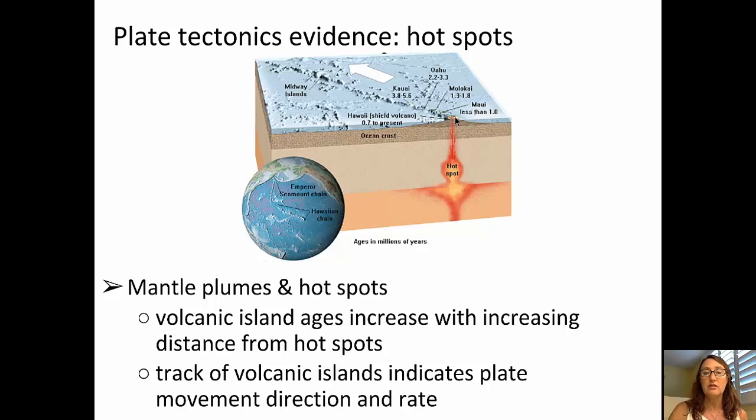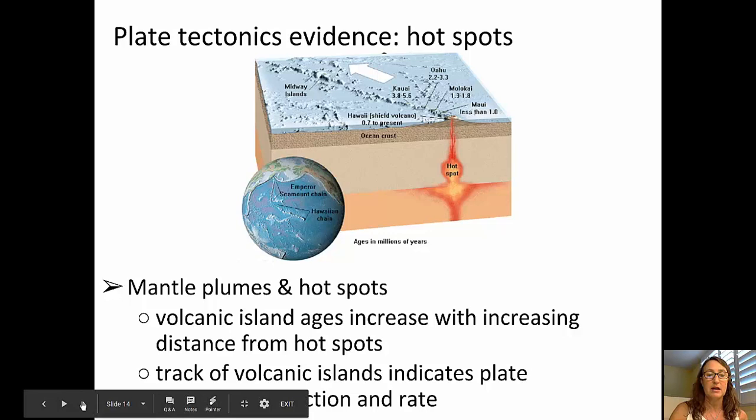And we can see the ages of those islands moving away from the current location of that hot spot, so somewhere near the big island of Hawaii, and going back through the Hawaiian islands, and back through other islands in the Hawaiian emperor chain, the increase in age. Now that suggests that the plate, the Pacific plate in this case, has moved over that stationary hot spot, and we are seeing this hot spot track with increasing age, with increasing distance from that hot spot.